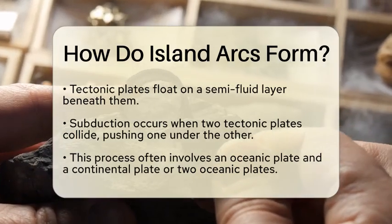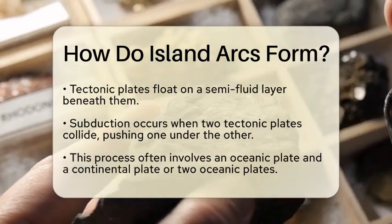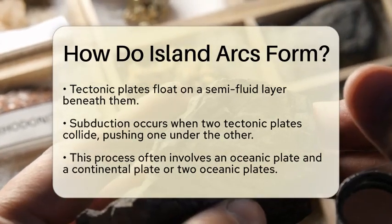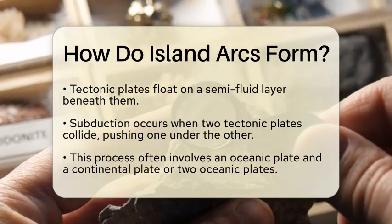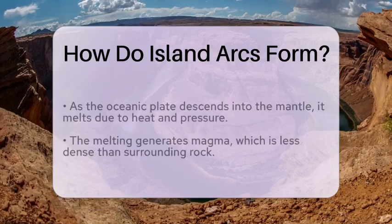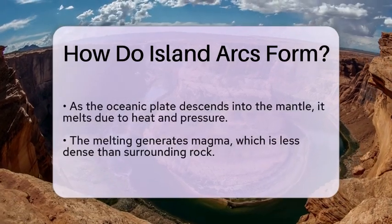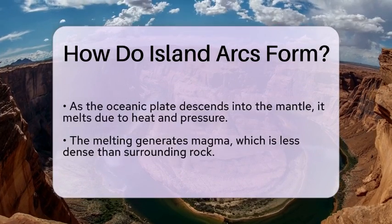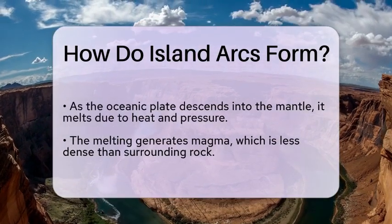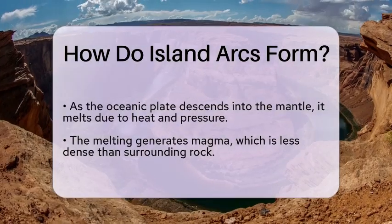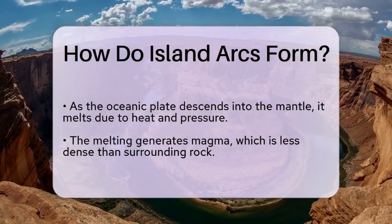As the oceanic plate descends into the mantle, it begins to melt due to the intense heat and pressure. This melting generates magma, which is less dense than the surrounding rock. Over time, this magma rises through the crust and can lead to volcanic activity. When the magma reaches the surface, it erupts and forms volcanic islands.